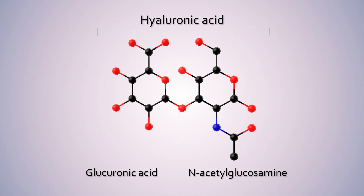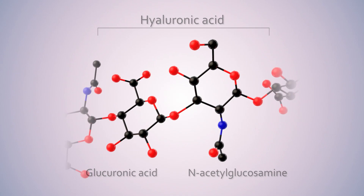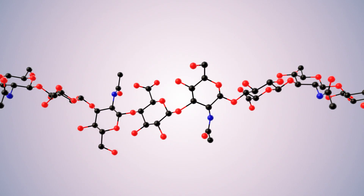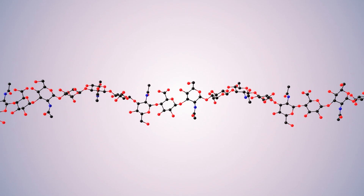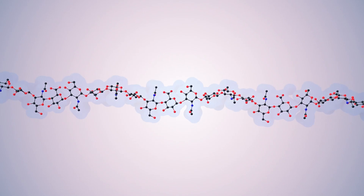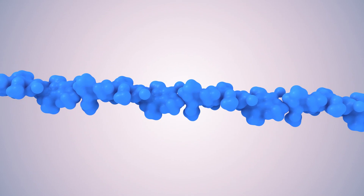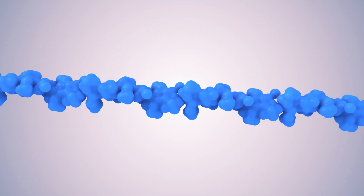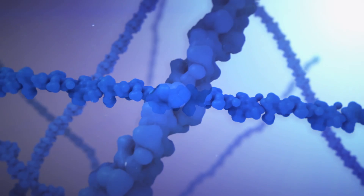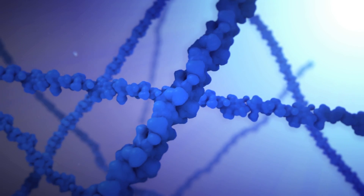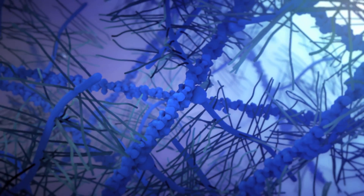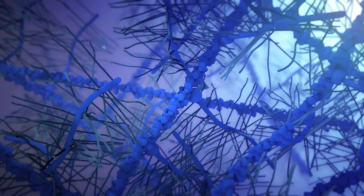HA is a large polymer composed of repeating disaccharide units. The average HA chain contains 10,000 disaccharide repeats and has a molecular mass between 200,000 and 10 million Daltons. The network of HA that surrounds cells provides a molecular scaffold for many components of the extracellular matrix.